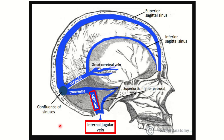Let's look at the venous sinuses in the brain. Here we can see the superior sagittal sinus, which is the longest sinus. Then we have the inferior sagittal sinus — the superior sagittal sinus passes along the upper part of the falx cerebri, and the inferior sagittal sinus passes through the inferior part of the falx cerebri. Then we can see the great cerebral vein. The great cerebral vein and inferior sagittal sinus together form the straight sinus.